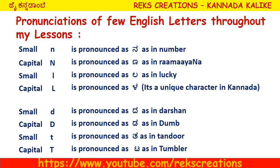Pronunciations of a few English letters used throughout my lessons: N is pronounced as N as in 'number'; N is pronounced as N as in 'Ramayana'; L is pronounced as L as in 'Lucky'; L is a unique character in Kannada. D is pronounced as D as in 'Darshan'; D is pronounced as D as in 'Dumb'; T is pronounced as T as in 'Tandoor'; T is pronounced as T as in 'Tumblr'.